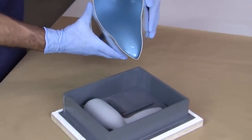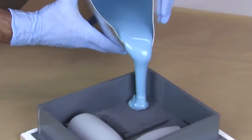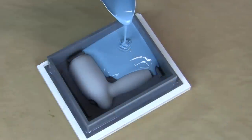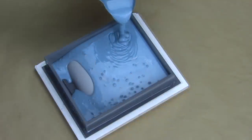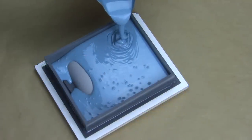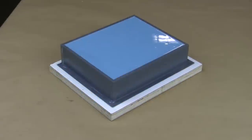Pour the silicone in a thin stream away from the pattern, allowing the flow of material across the geometry and pushing air out of the way as it flows. Any residual bubbles should rise to the surface and pop on their own.